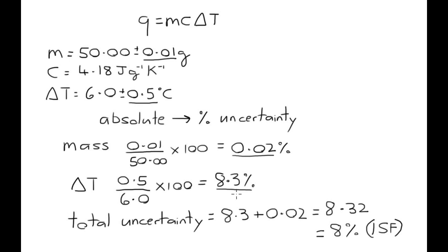We add together all the percentage uncertainties. Now that actually gives you a value of 8.32. Now with uncertainties you should only write uncertainties to one significant figure. So in this case I would write my uncertainty of this experiment to be 8% and that's to one significant figure.